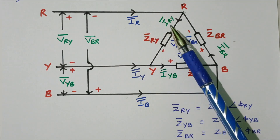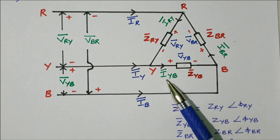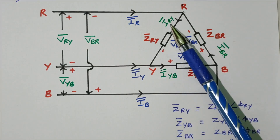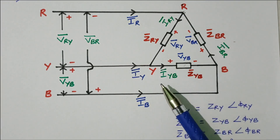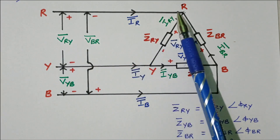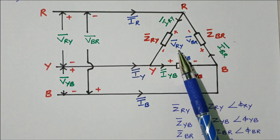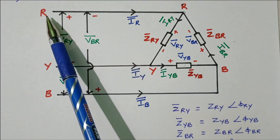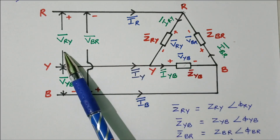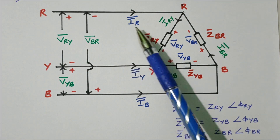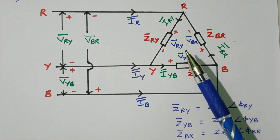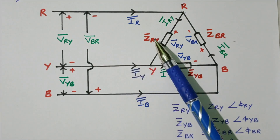I-R is the vector difference of I-R-Y and I-B-R. I-Y is the vector difference of I-Y-B and I-R-Y. I-B is the vector difference of I-B-R and I-Y-B. Regarding voltage: V-R-Y is the voltage between R and Y, and the same voltage appears across the phase as well. Phase voltage equals line voltage. In delta connection, the line voltage is equal to the phase voltage, but the line current is the vector difference of phase currents — just the opposite of star connection, where currents are equal and voltages are the vector difference.